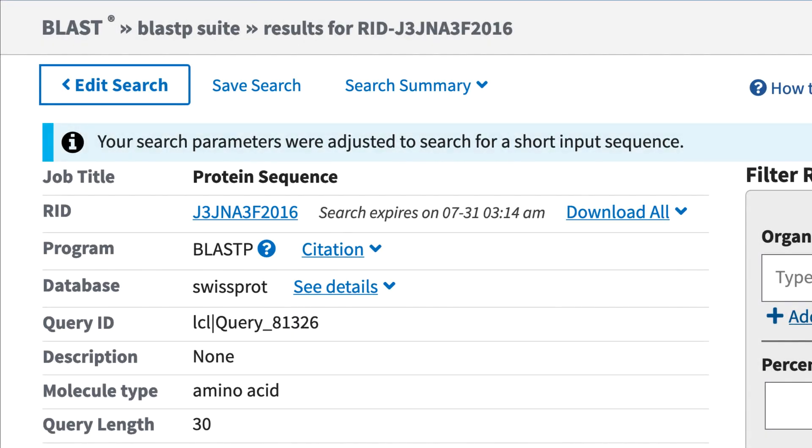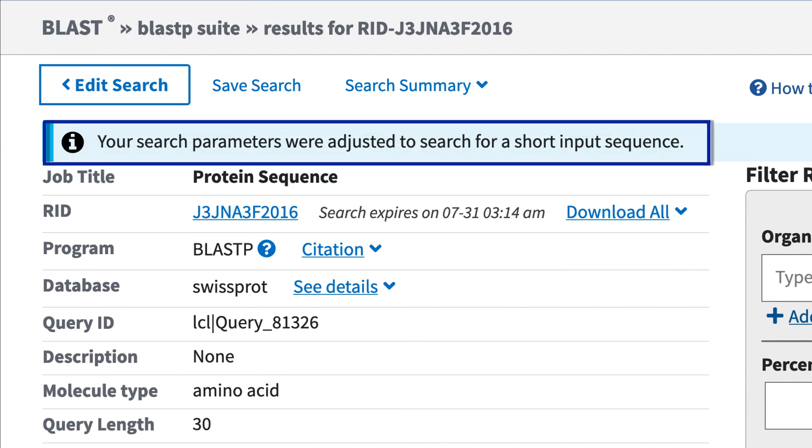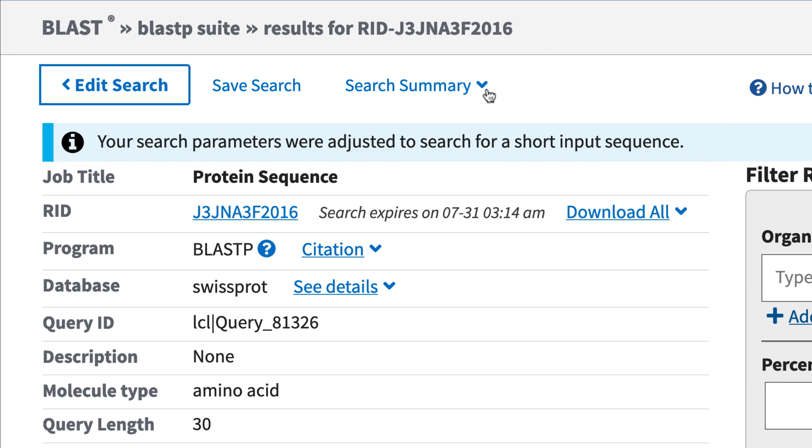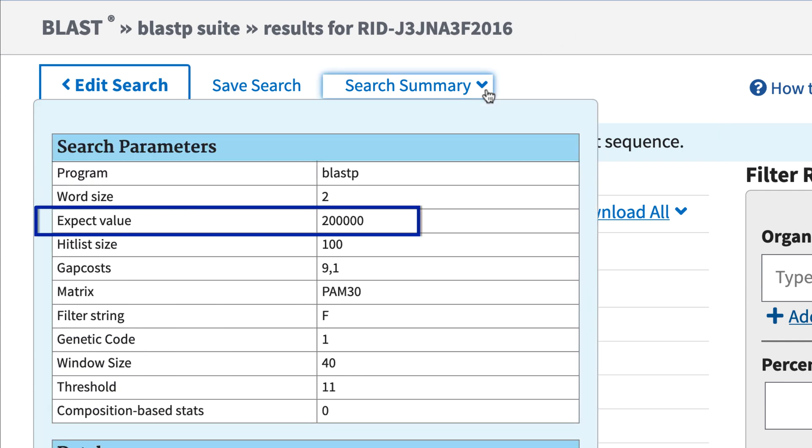By the way, if you're using WebBLAST on our site, and you submit a sequence with 30 or fewer characters, we automatically adjust the search parameters. One of the primary changes is to greatly increase the expect value threshold, otherwise you probably would not get any alignments.